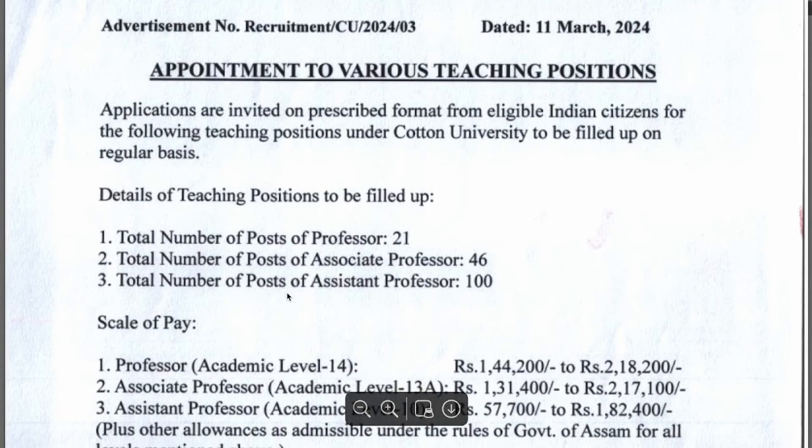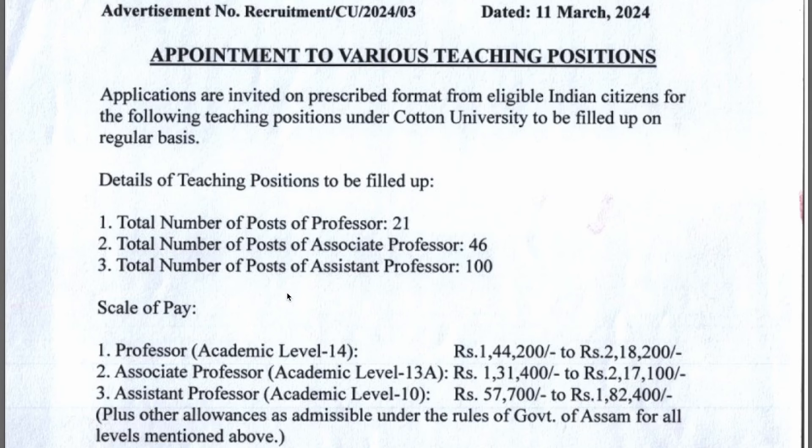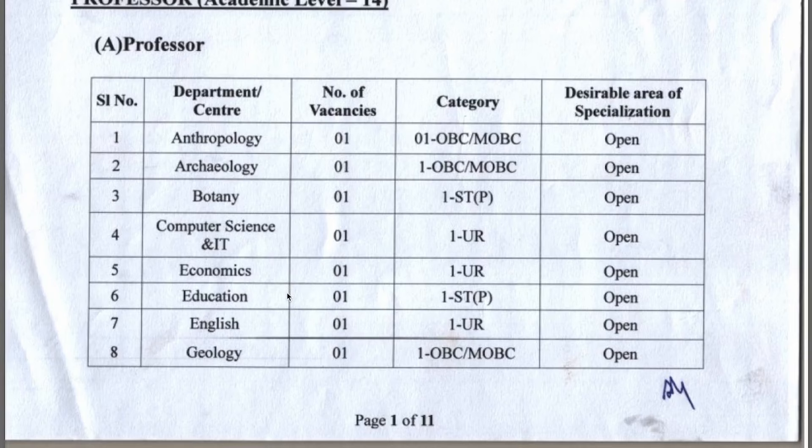Total posts: Professor is 21, Associate is 46, and Assistant is 100. Assistant has quite good vacancies. The salary base is good — Professor is around 1,000 to 2,000 scale. UGC norms are followed. For Assistant, the pay level is 10 — approximately 57,000 and above. Subjects covered are also good.